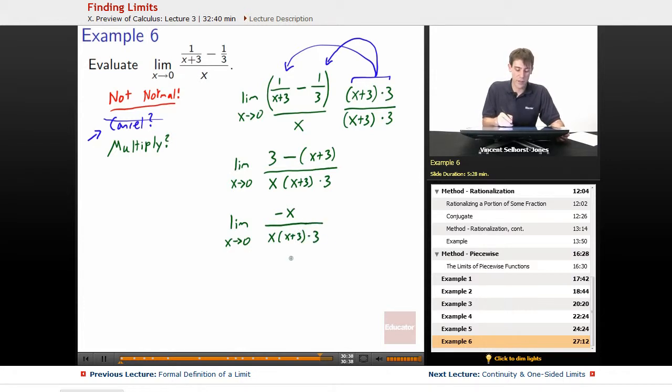Limit as x goes to 0 of negative x over x times x plus 3 times 3. At this point, we go, hey, we can cancel some stuff. This x and this x cancel, and we're left over with the limit as x goes to 0 of negative 1 now, because it just cancels out the x, not also the negative, times x plus 3 times 3.